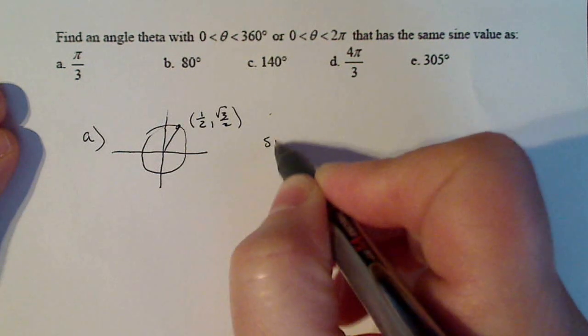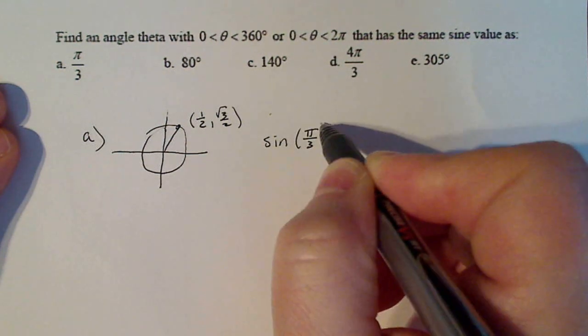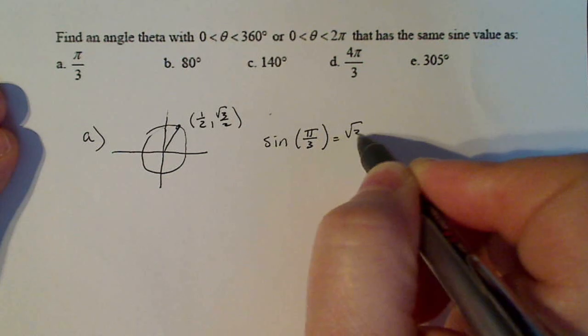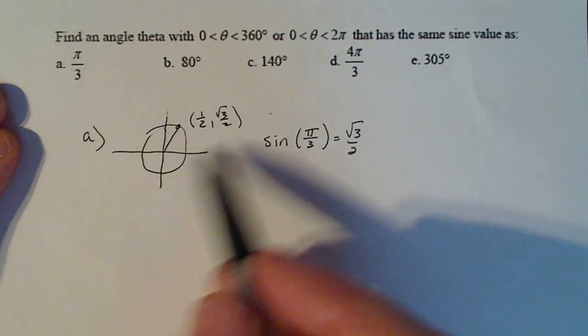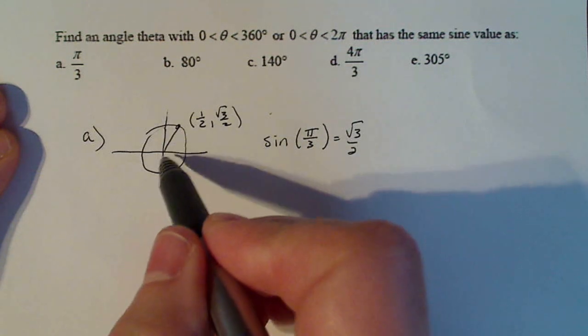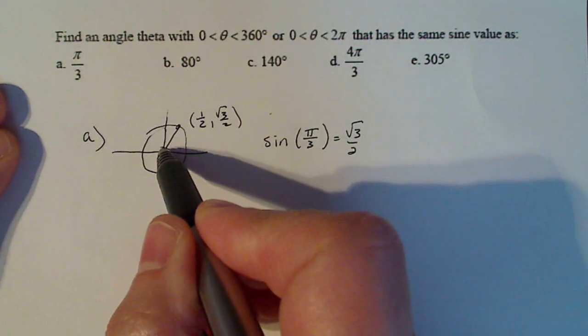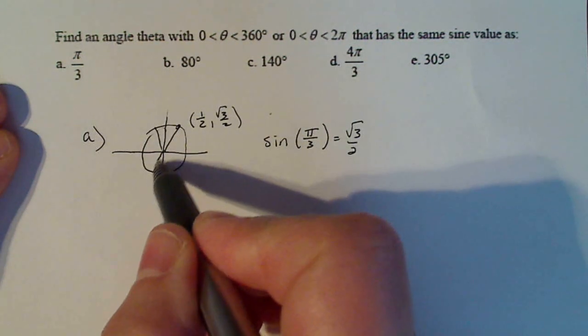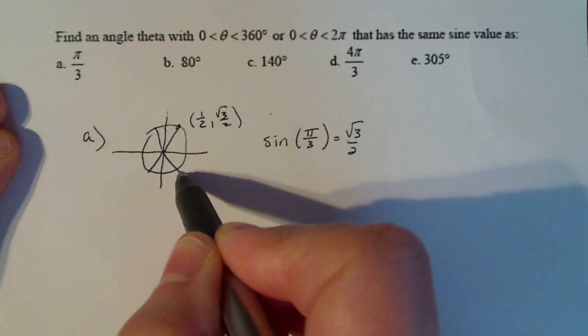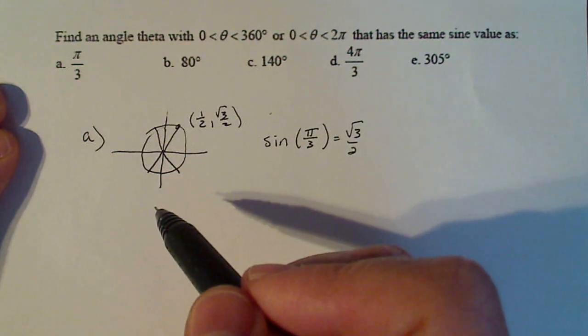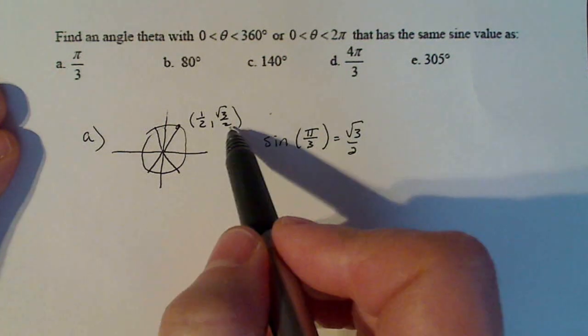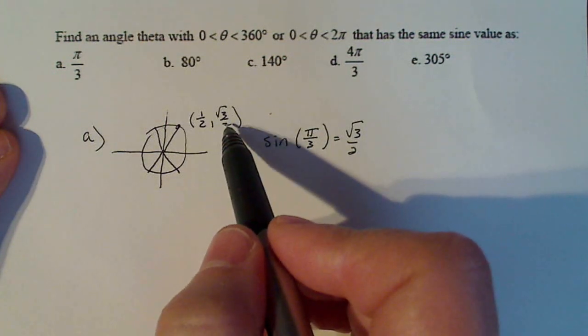So the sine of pi over three, according to definition is square root of three over two. Now I'm trying to find one other angle measurement in here that has the exact same thing. Well, I know that everything that has the same reference angle will contain the ordered pair. That's this with just different signs, S-I-G-N signs like plus or minus. And I want the one that's going to have a positive Y value.